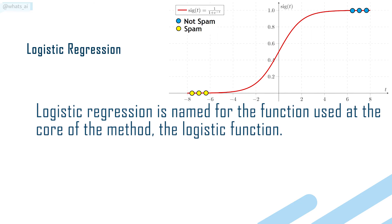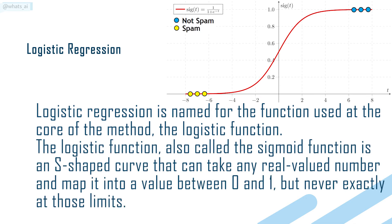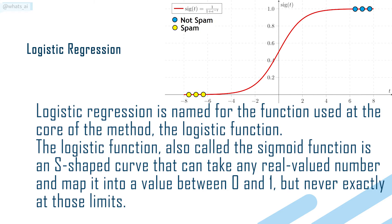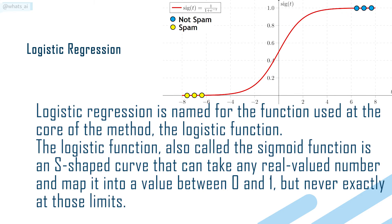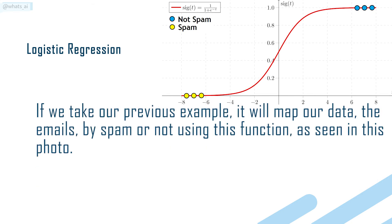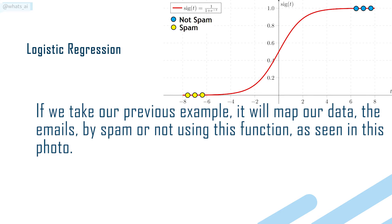Logistic regression is named for the function used at the core of the method — the logistic function. Also called the sigmoid function, it is an S-shaped curve that can take any real-valued number and map it into a value between 0 and 1, but never exactly at those limits. Using our previous example, it will map our data — the emails — by spam or not using this function, as seen in this image.